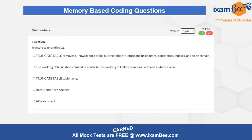Question seven is related to the TRUNCATE command in SQL — what does TRUNCATE do? It is factual but slightly logical, as you need to carefully read the different options to identify the best answer. You can see on the right-hand side the marking scheme: plus two marks for a correct answer and minus 0.5 for an incorrect one. This applies to all questions, and this is how the UI looks on iXambi's question palette if you are attempting our mock tests.